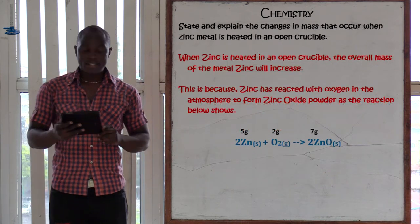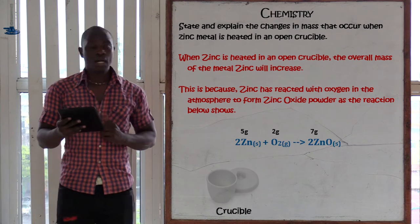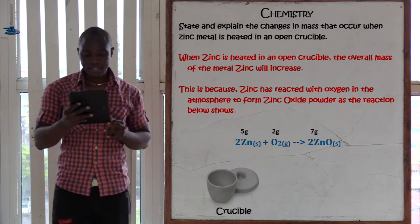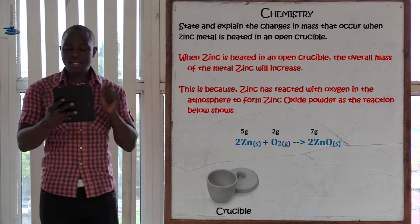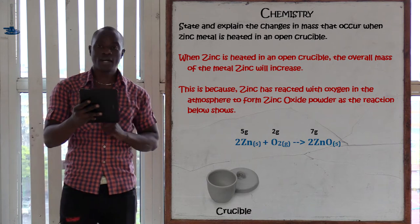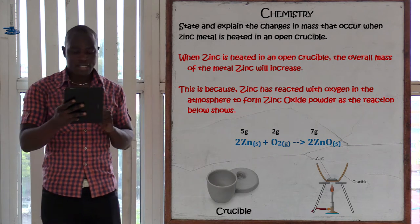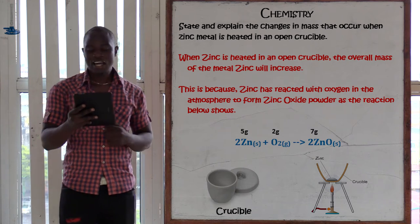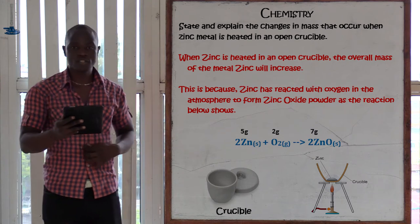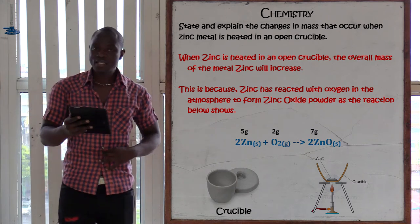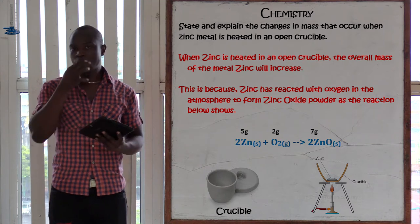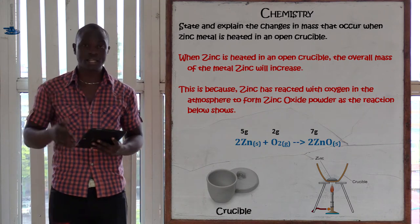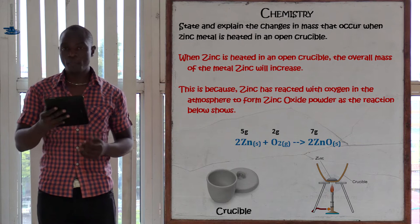Question number 14 asks us to state and explain the changes in mass that occur when zinc metal is heated in an open crucible.